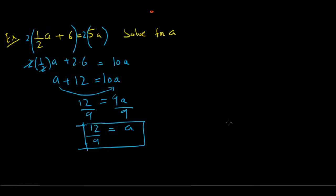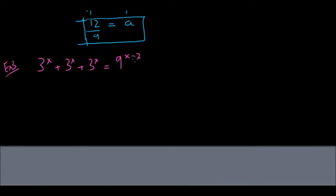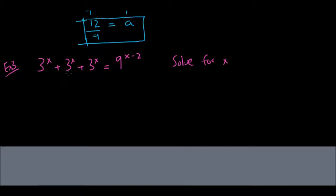Example three involves exponents: 3 to the x plus 3 to the x plus 3 to the x equals 9 raised to x minus 2. Solve for x. This is an actual GRE question. For these types of problems, your goal is to get everything on the same base. On the left side the base is 3, on the right side the base is 9, so we want to convert 9 to a base of 3.